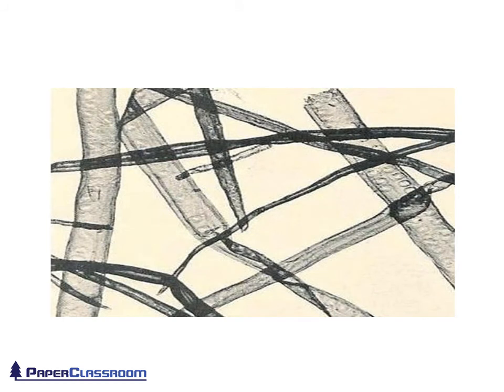Here we see a micrograph of a mixture of fibres. There are some hardwood fibres and some softwood fibres. You can tell which is which by close inspection. Look at the fibre on the right — see the little window-like markings, just like the windows of an aeroplane. These are known as pit cells or window cells, and are characteristic only of softwood fibres.